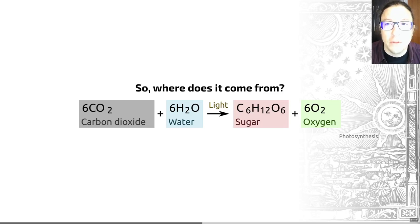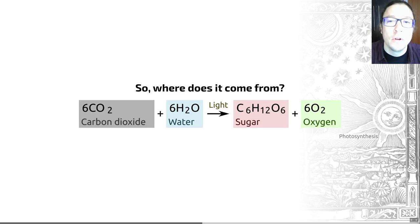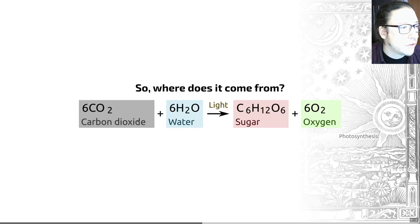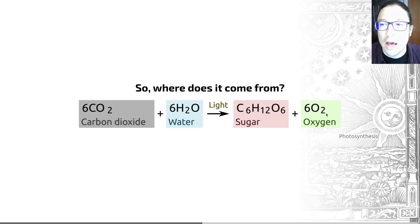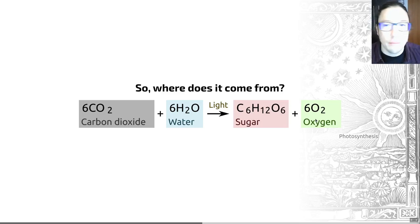Oxygen started building up at some point in the Archean, and the buildup of oxygen in the atmosphere resulted in a thing called the GOE — the Great Oxygenation Event, sometimes called the Great Oxidation Event. The GOE requires the evolution of photosynthesis of the type shown on this slide. This is a reaction that takes carbon dioxide and water and uses energy from the sun to convert these into complex sugar and free oxygen — and that's the origin of free oxygen on Earth.